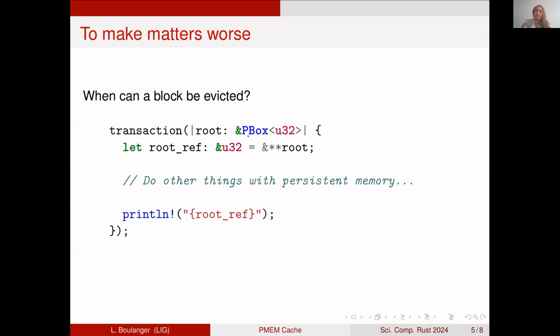When we do a transaction, we get a reference to the root of the persistent memory, which is a user-defined structure that the user chooses to store in persistent memory. In our case, it's just a persistent box of an integer, and we have a reference to it - the integer is stored in persistent memory itself. For fun, let's get a reference to the u32, which we get by dereferencing the root twice - first for the reference and second for the pbox - and then we get a reference to it. But let's not do anything with the reference at all. We're going to do a bunch of other things with persistent memory and make the cache do some work. Then at the very end of the transaction, we want to print the number.